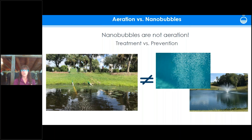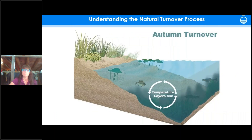I did want to clear up some confusion: nanobubbles and aeration are not the same. Nanobubbles do add oxygenation benefits but don't provide the same circulation benefits as a fountain or aeration system. We look at nanobubbles as more of a treatment, whereas fountains and aeration systems are a proactive water quality improvement strategy.